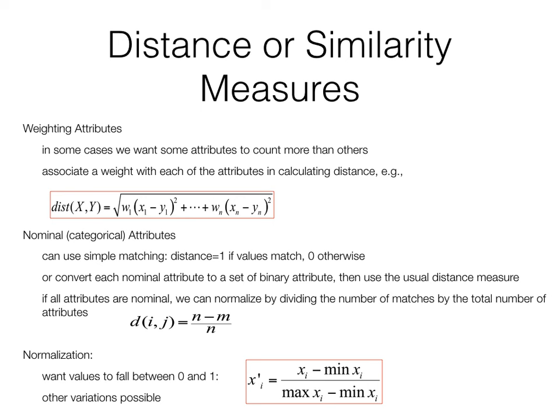Sometimes we want certain attributes to count more than others. We can add weights w1 through wn to the distance measure — for Euclidean distance, set w to 0 to ignore an attribute or higher to increase its contribution. For categorical attributes, we can use simple matching (distance 1 if they don't match, 0 if they do), or convert nominal attributes to binary through binarization, then apply the usual distance measure.